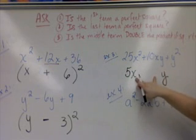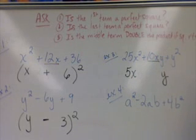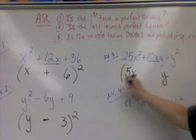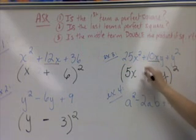If I multiply these two together and I double it, will I get the middle 10xy? 5x times y is 5xy. 5xy doubled is 10xy. So I can put the quantity brackets squared. The sign in the middle would be positive.